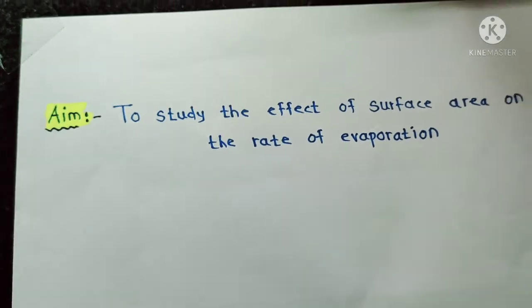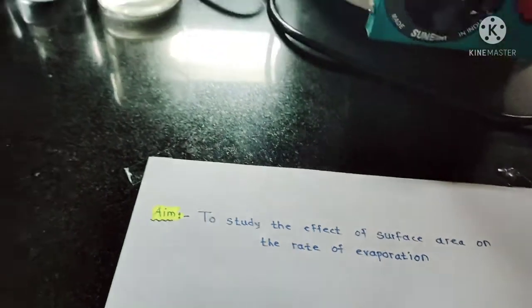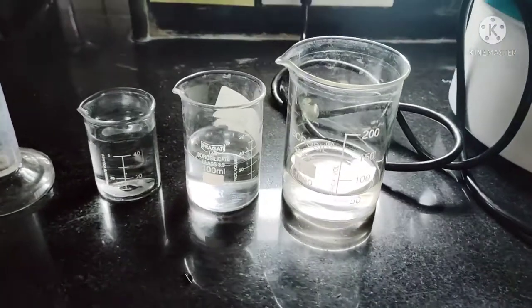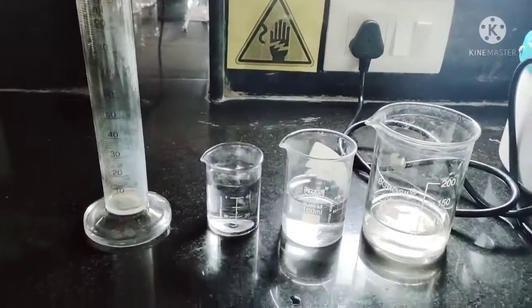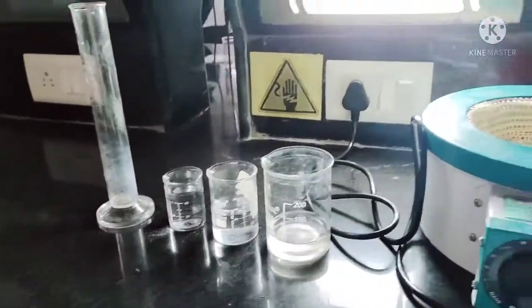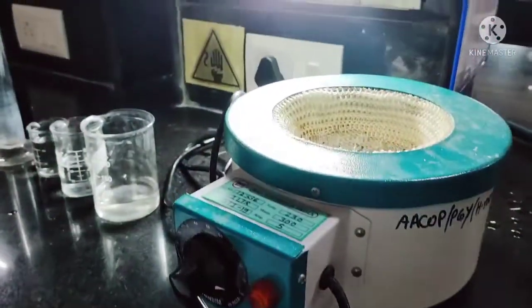The next practical is to study the effect of surface area on the rate of evaporation. For this practical we require different capacity of beaker, measuring cylinder, heating mantle, and stopwatch.